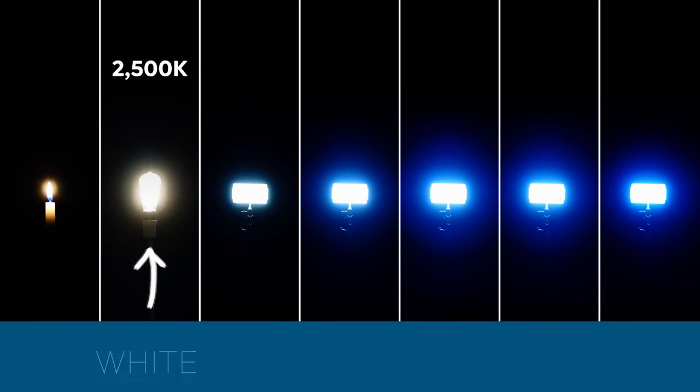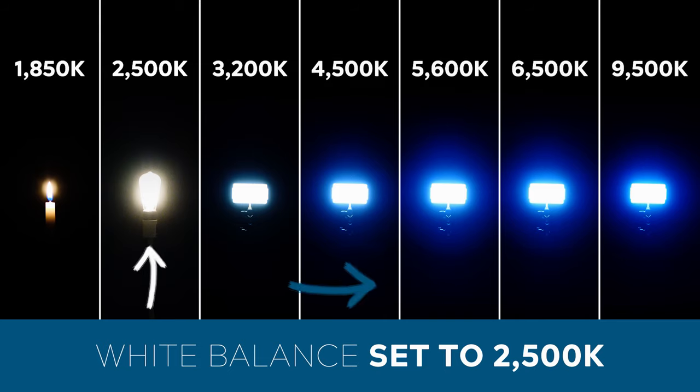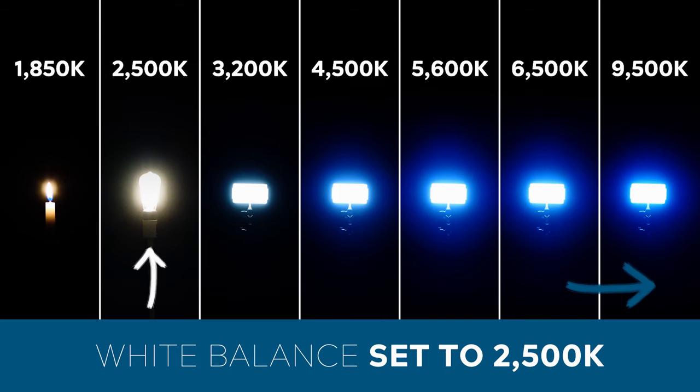First, let's have a look and see what happens when we change our white balance to the extreme ends of the scale. We'll start with 2,500 degrees Kelvin, which is the lowest our camera would allow us to go. The candle still appears to be slightly orange as it still has a lower color temperature than the white balance point, but everything to the right of that gets progressively cooler and more blue, with 9,500 degrees Kelvin appearing almost royal blue.